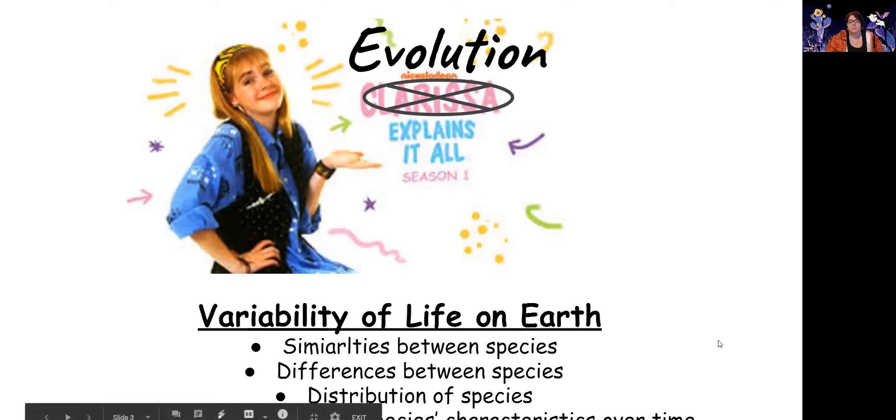Evolution explains the variability of life on earth. This means similarities between species, differences between species, the distribution of species, and the change in the species and their characteristics over time.